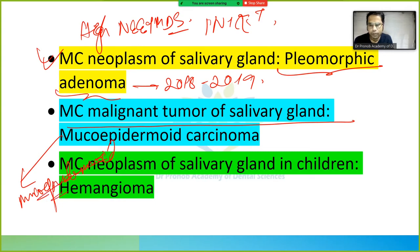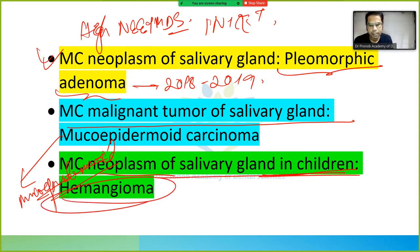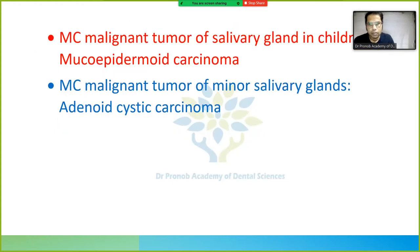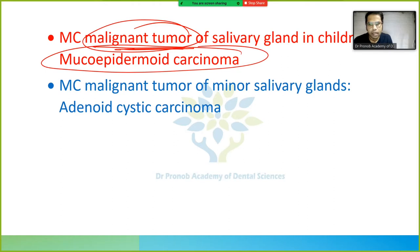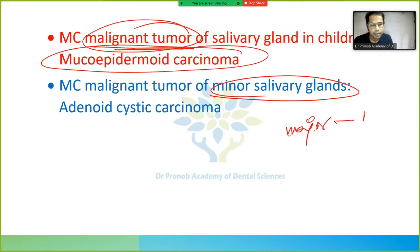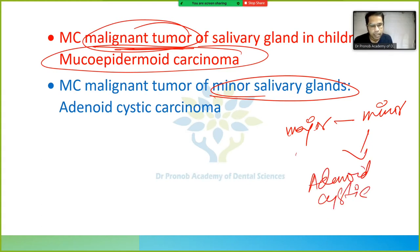The most common tumor in children is hemangioma. The most common malignant tumor in children is also mucoepidermoid carcinoma. The most common malignant tumor of minor salivary glands is adenoid cystic carcinoma.